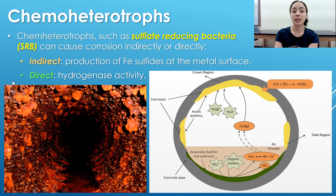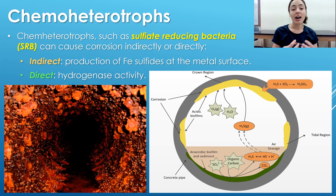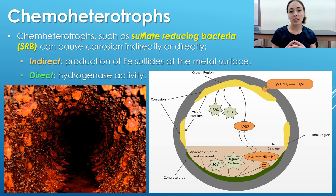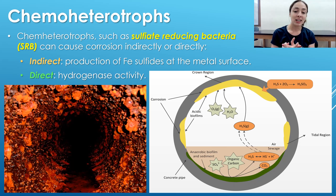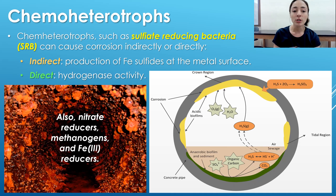The more direct way SRB cause corrosion is through their hydrogenase activity. Hydrogenase is an enzyme that SRB and many other chemoheterotrophs contain. This enzyme catalyzes the acceptance of H₂ — that protective hydrogen compound that might form around the corroding metal — and releases protons from this process. Not only does it destroy any protective H₂ layer around the metal surface, but it also produces protons that then act as electron acceptors for the reduced metal, directly oxidizing it.